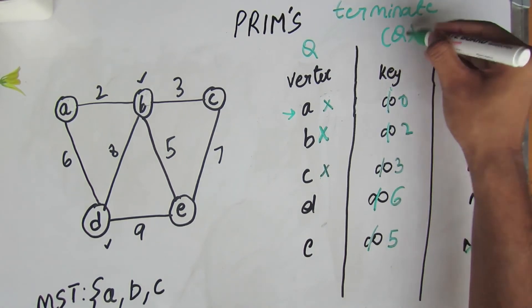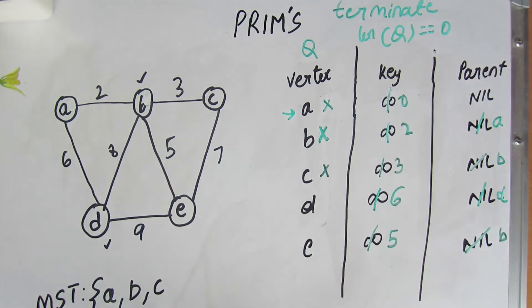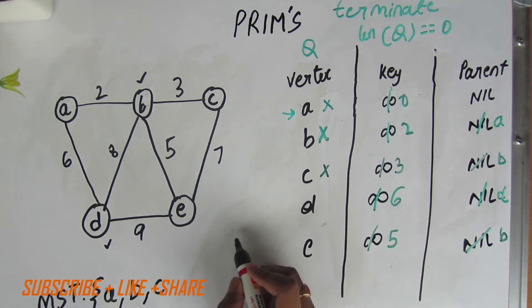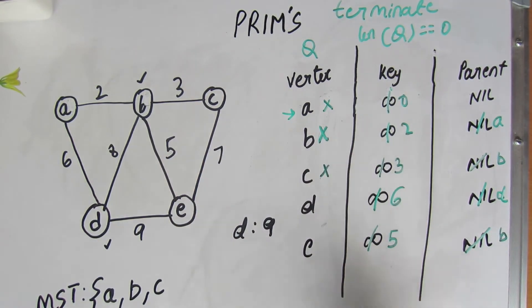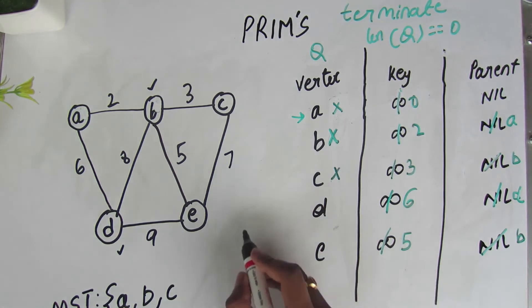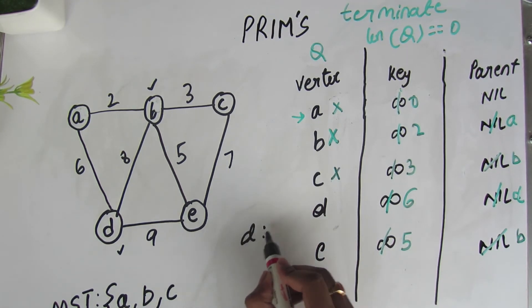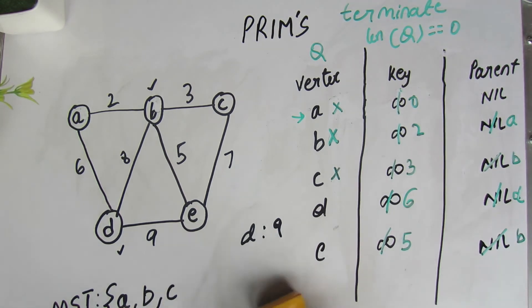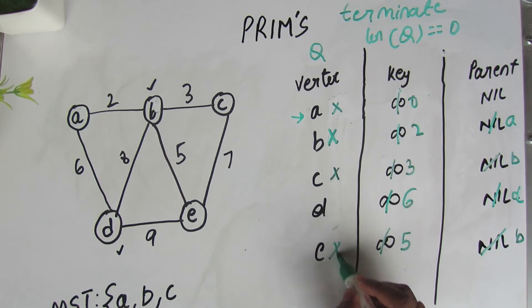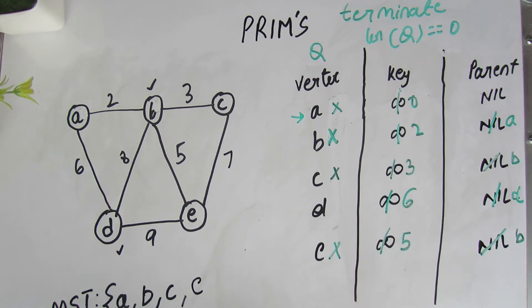The terminating condition is when the queue length equals zero. We still have two more elements. The minimum is now E, so we consider its adjacent vertices: D with weight 9, and B and C which are already part of the minimum spanning tree. We compare D's current key value of 6 with 9 — since 9 is greater, there is no need to update. E is successfully extracted and placed in the MST set.